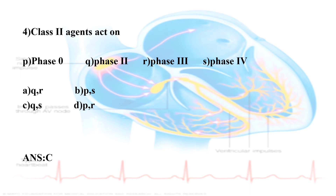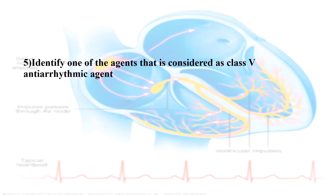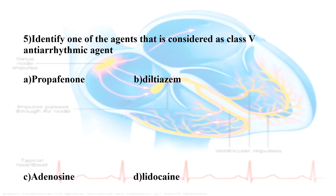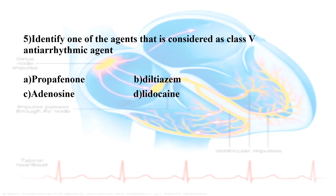Fifth question: Identify one of the agents that is considered a class 5 anti-arrhythmic agent. The options are: Option A, Propafenone; Option B, Diltiazem; Option C, Adenosine; Option D, Lidocaine. The correct answer is Adenosine.